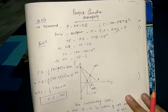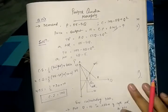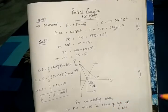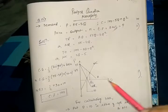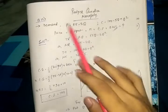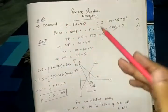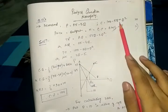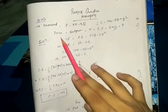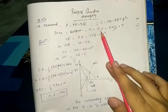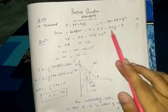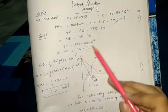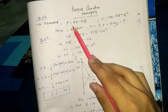Hey guys, in this video I'm going to discuss Pindyck — how to calculate dead weight loss under monopoly in an increasing cost industry. The question is from Pindyck, question number 15 under monopoly. The demand and total cost functions are given, and we are asked to find out the price, output, profit, consumer surplus (CS), and dead weight loss (DWL).